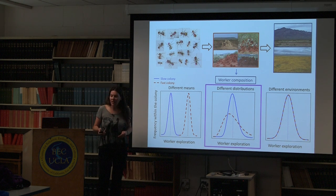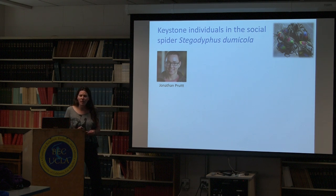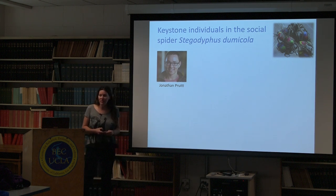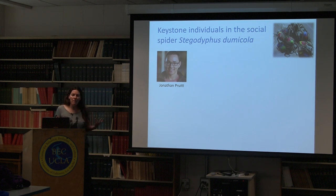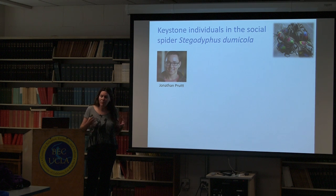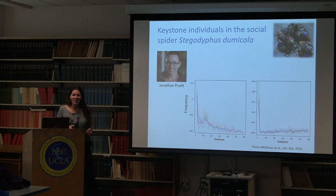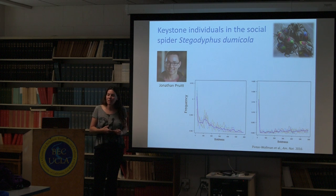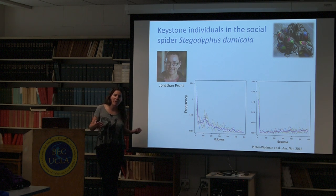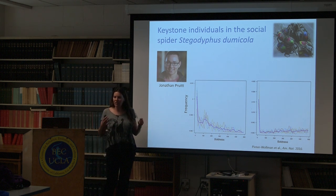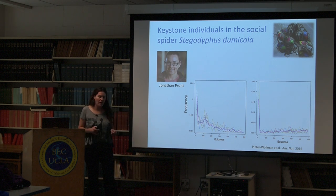Moving on to the different distributions idea. About a year ago I started working with collaborator Jonathan Pruitt on social spiders - Stegodyphus dumicola. Very similar to social insects, they live in mostly-female groups, care for their brood together, build their webs together, and capture prey together, but they have eight legs. When we go to the field and look at the behavior of these spiders, we find variation within a colony in their boldness - basically how quickly they recover from us puffing air on them.